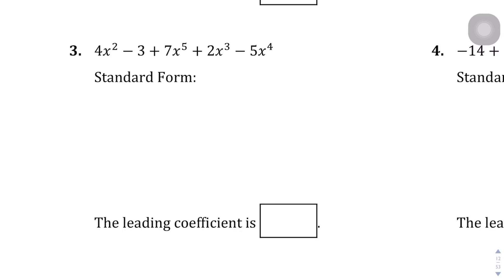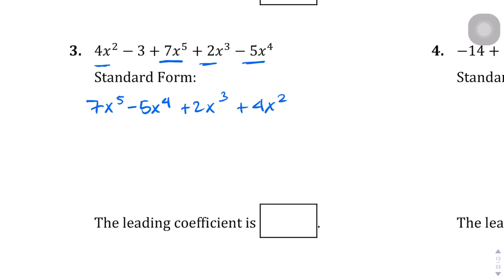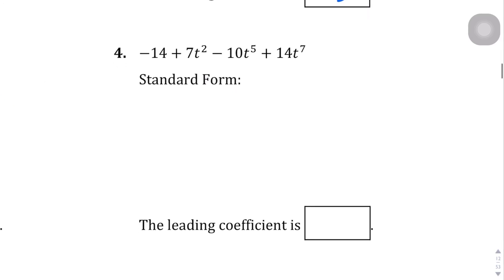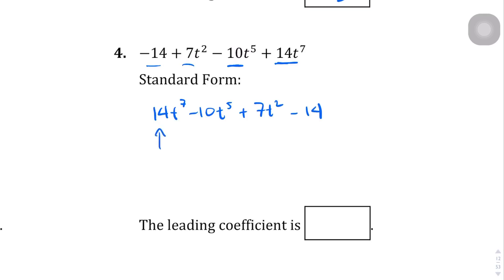Question three has five terms. Ordering by degree: 7x⁵ minus 5x⁴ plus 2x³ plus 4x² minus 3. The leading coefficient is seven. Question four: 14t⁷ minus 10t⁵ plus 7t² minus 14. The leading coefficient is 14.